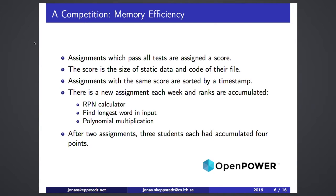The method is to have a competition about writing memory-efficient C code. There is a score for each assignment: it must first pass all the tests, and then the score is based on the size of the instructions and of static data — not the heap, not the stack, but static data. There are three assignments, one per week: an RPN calculator, finding the longest word in input, and polynomial multiplication, with increasing levels of difficulty.